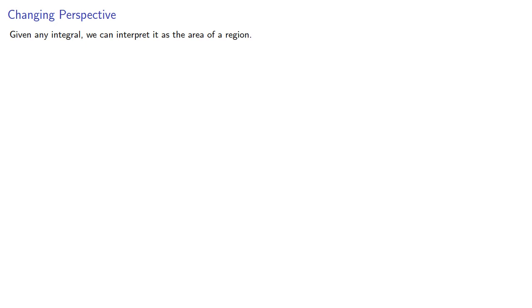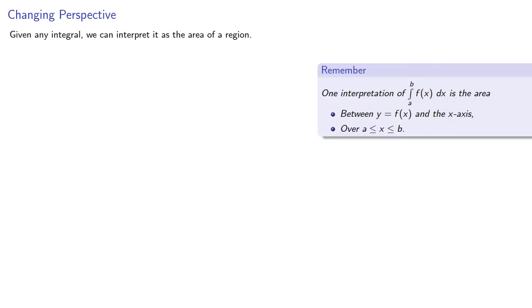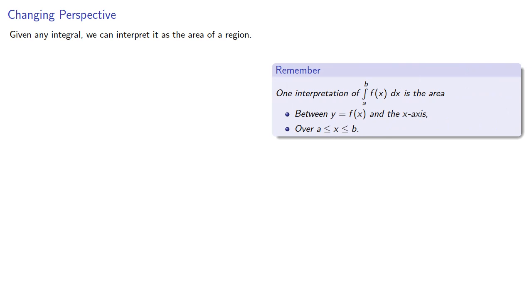Given any integral, we can interpret it as the area of a region. But given a region, we can find its area by summing representative rectangles that run vertically, giving us an integral in terms of dx.